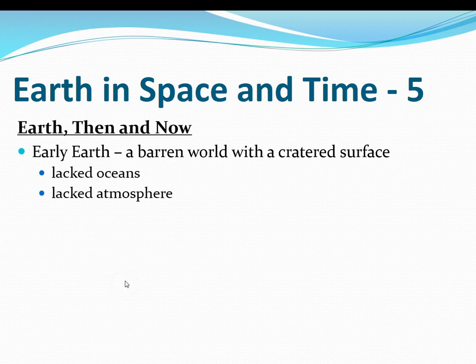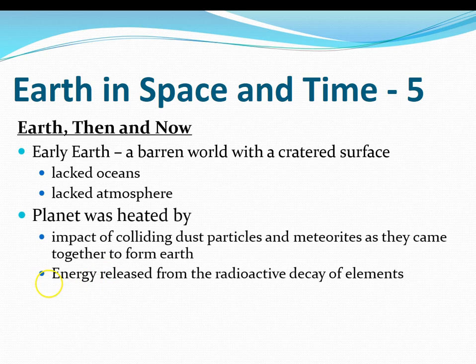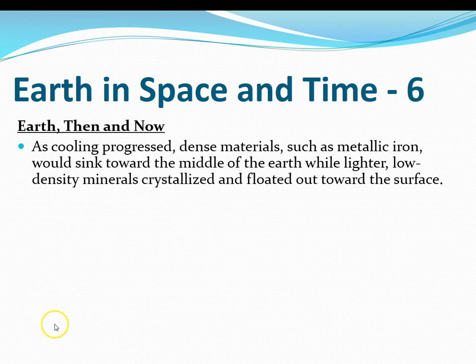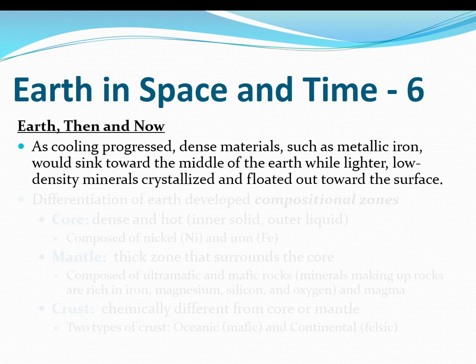Looking at the early Earth, it was a barren world with many craters. There were no oceans and no atmosphere. The planet's heat came from collisions by dust particles and meteorites, and also from heat released by radioactive decay of elements. Eventually these heat sources combined and the Earth's internal temperature got high enough that it was likely completely melted — or at least mostly molten at various times early in Earth's formation. As Earth cooled, the heavier, more dense elements sank toward the middle of the Earth.